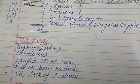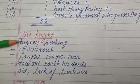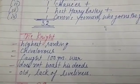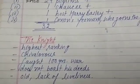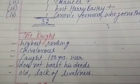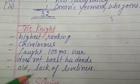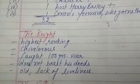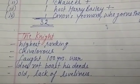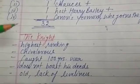In the Prologue to Canterbury Tales, the first character is the Knight, who belonged to the highest ranking. He was very chivalrous — meaning very brave. He fought in the Hundred Years' War and did not boast about his deeds. He was now old and lacked liveliness.